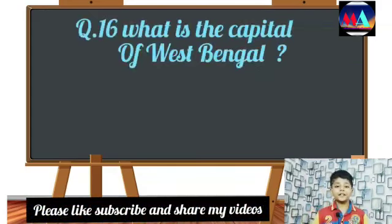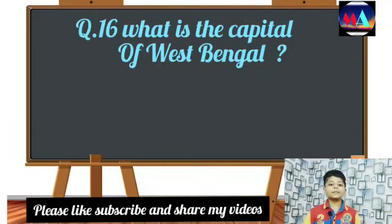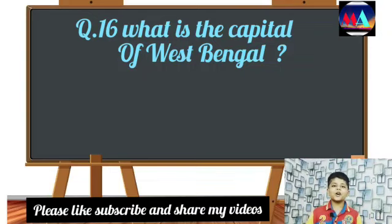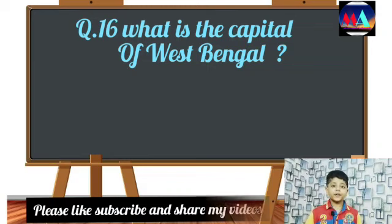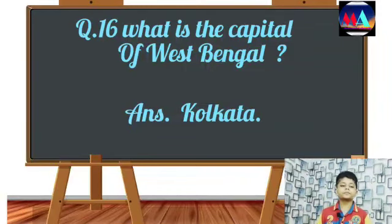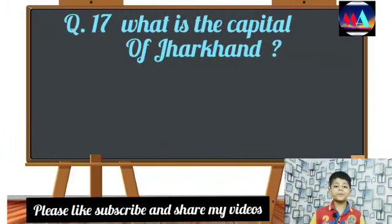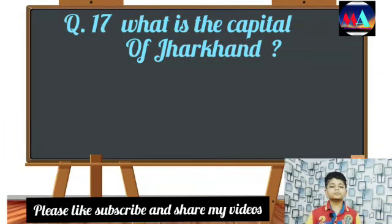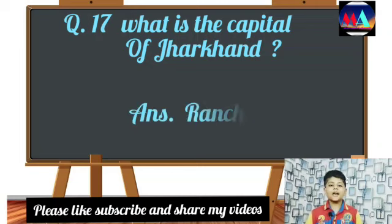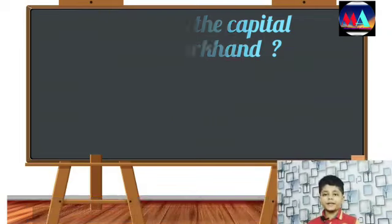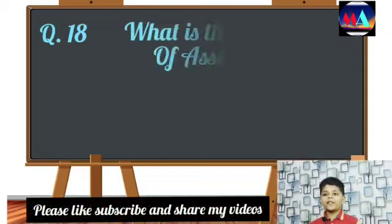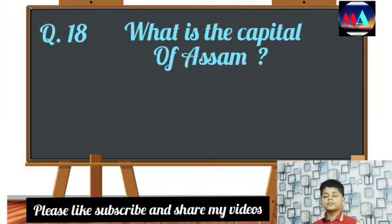Question number sixteen: What is the capital of West Bengal? Answer: Kolkata. Question number seventeen: What is the capital of Jharkhand? Answer: Ranchi. Question number eighteen: What is the capital of Assam? Answer: Dispur.